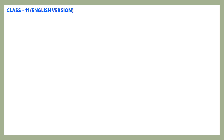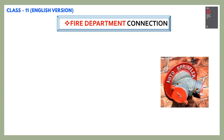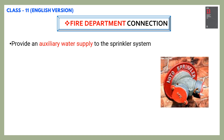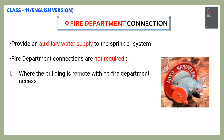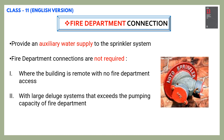We shall have a look at fire department connections. Fire department connections provide an auxiliary water supply to the sprinkler system. These connections are not required in special cases, such as if the building is in a remote area with no fire department access, or if there is a large deluge system that exceeds the pumping capacity of the fire department. Also, in a single-storey building not exceeding 185 square meters or 2,000 square feet, fire department connections — FDCs — are not required.